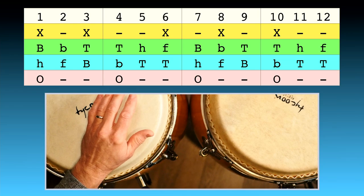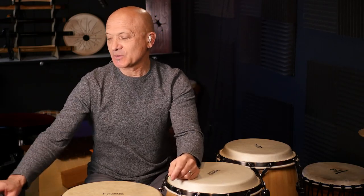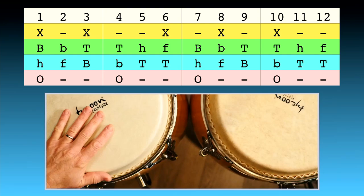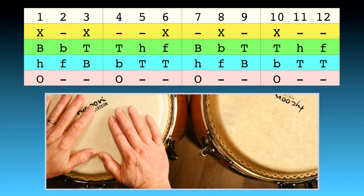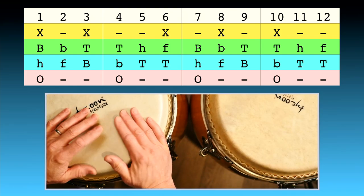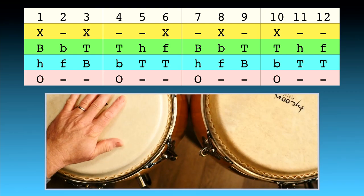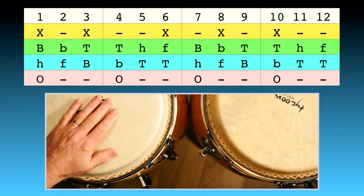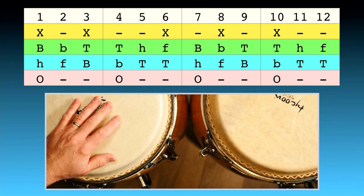Now I know you're probably wondering what all those letters mean — I'm going to explain right now. Capital letters are the right hand, dominant hand. If you're left-handed, switch everything around. Lowercase letters are the left hand. B stands for bass, T is for tone — open tone. H and F I use for hand and finger. You could think of that as heel-toe if you want; some people teach heel-toe, I teach hand-finger.